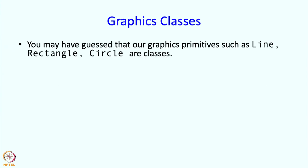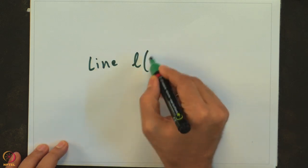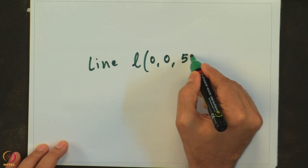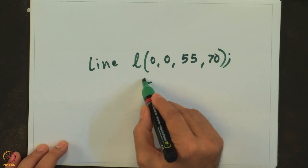So, graphics classes. You may have guessed that our graphics primitives such as line, rectangle, and circle are actually classes. So when we create lines, we are really just creating instances of the class, or these are structs and we are creating structs. And when we write something like line L with coordinates 0,0 and 55,70, this really is a constructor call.